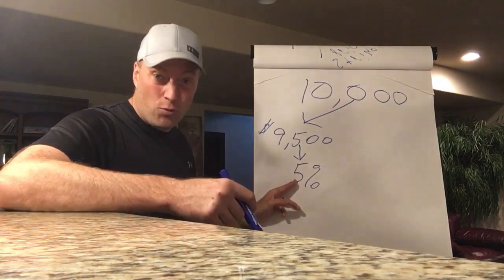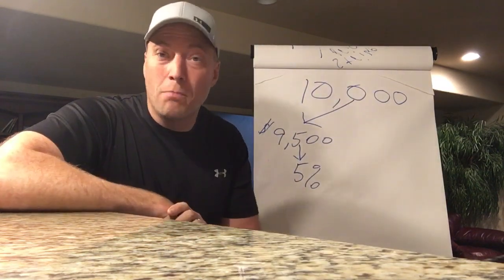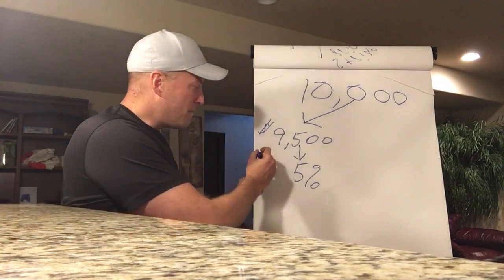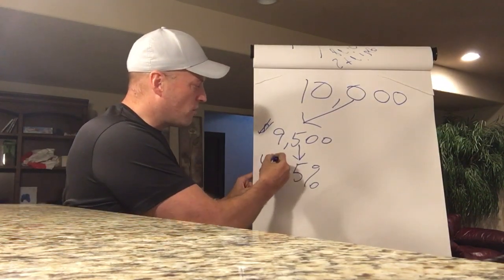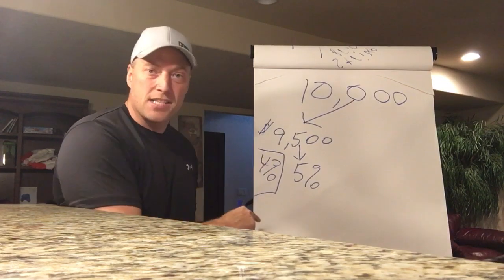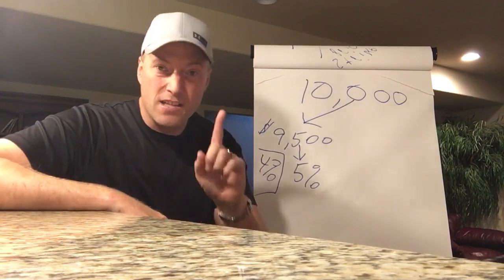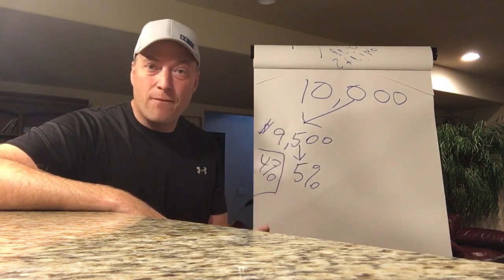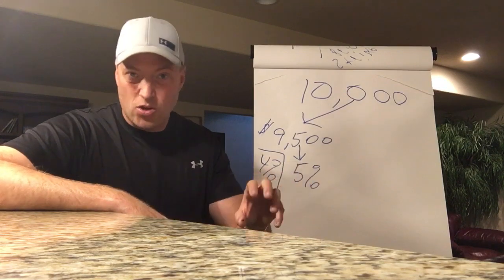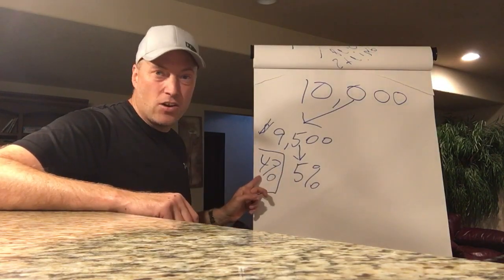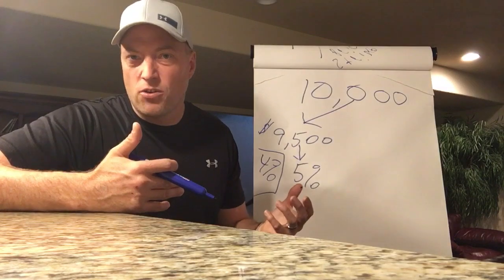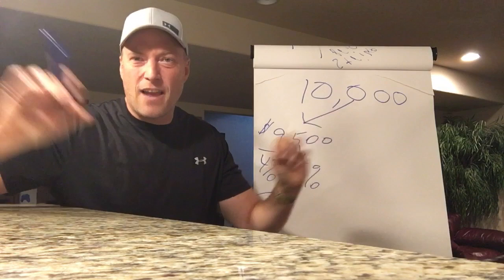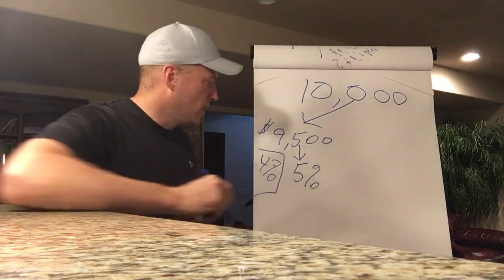With annuities, more cases than not they are priced off new money rates, meaning instead of the whole general account yield, we look at what we could earn if we invested today — annuities may be priced at around 4%. That is the first of a couple reasons why annuities have lower caps than life insurance. On the other side of the coin, annuity products typically don't have expenses as high as life insurance. My point is not that annuities are worse than life insurance — just completely different.